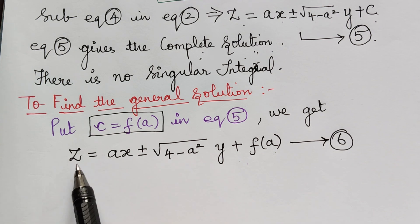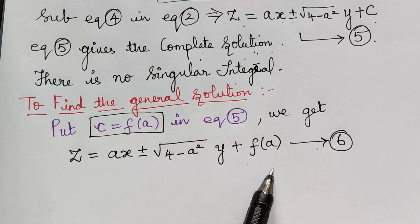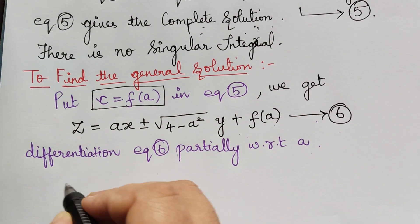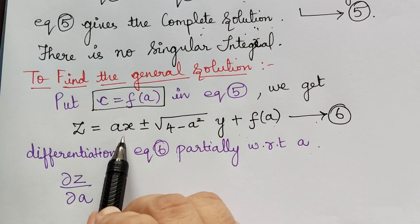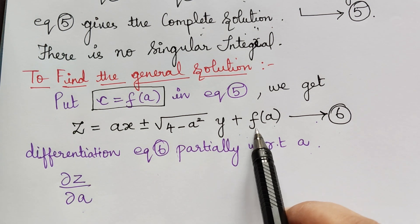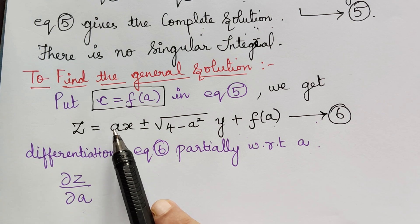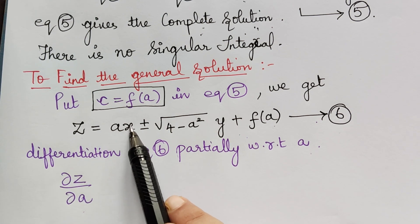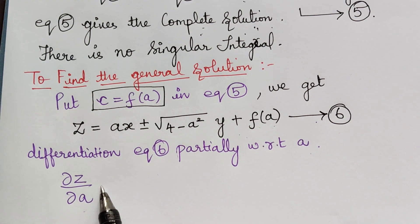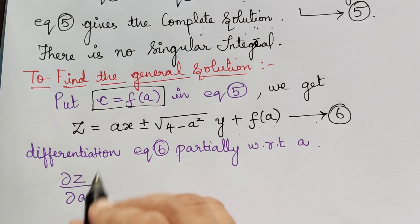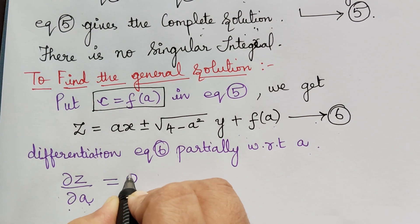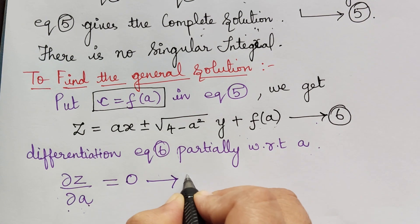The next step is to differentiate equation 6 with respect to a. Differentiating equation 6 partially with respect to a, we get dou z by dou a. We need not show the full differentiation if it is tedious because a is inside the square root. You get x plus or minus the differentiation of that term multiplied by y, plus f dash of a. After obtaining dou z by dou a, it has to be equated to 0 and marked as equation 7.